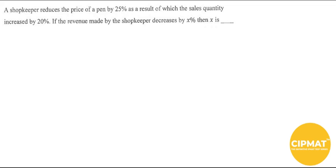For solving this question, you need to know a few things. First of all, how do you calculate the percentage change of something? To calculate percentage change, you need to do this: new value minus the old value, divided by the old value, times 100. And here it says if the revenue made by the shopkeeper decreases by x percent...